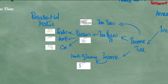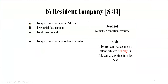In the case of a company, the rules differ slightly from AOP. A company incorporated in Pakistan, or established by provincial or local government, is automatically a resident — no further criteria need to be met. For a foreign company, it will be resident if the control and management of its affairs is situated wholly in Pakistan at any time during the tax year. For instance, if a board of directors holds its meeting in Pakistan and makes business decisions there, then control and management is situated wholly in Pakistan, and that foreign company will also be treated as a resident company.